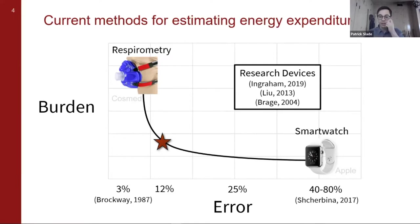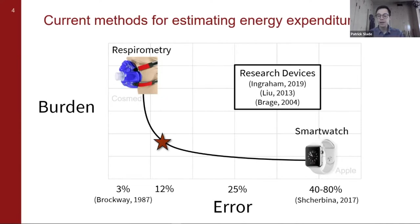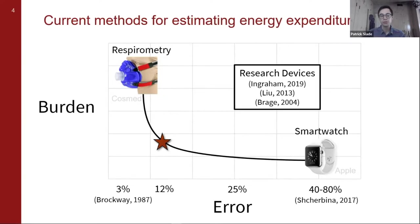Our system is in the sweet spot of being practical and useful, and it has some other important features: we can make real-time estimates of energy expenditure. It's an open-source system and it can capture more complicated activities. We designed this wearable system to be low burden to wear, similar to a smartwatch, but with about three times lower error than a smartwatch. We think this could really be a fieldable replacement for respirometry and provide a lot of information about the energy we're expending throughout the day.